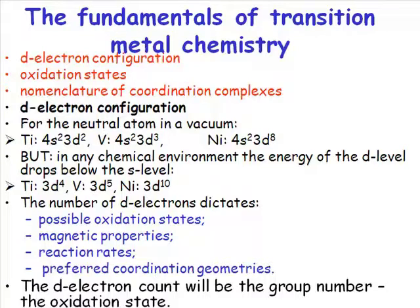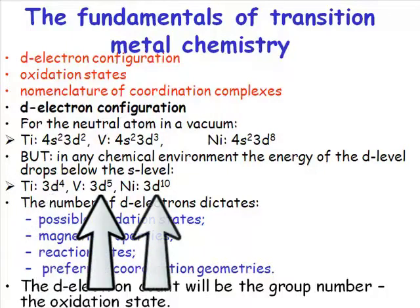So, in a chemical environment, the titanium atom will become 3d4 because titanium is in group 4, vanadium is in group 5, nickel is in group 10.